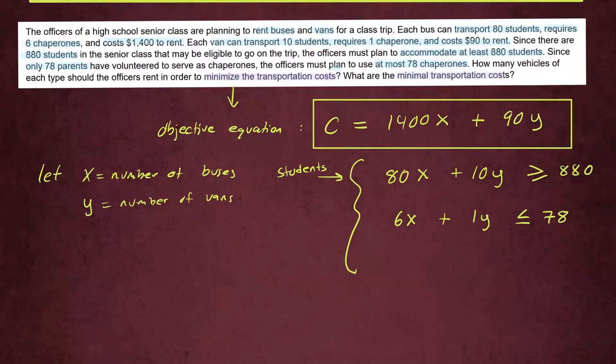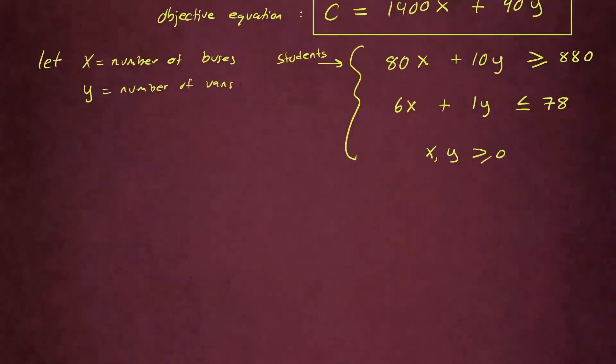We want to use this information to minimize our objective function. We also have to make sure that X and Y are positive numbers, so greater than or equal to 0. So this is what we call the constraint equations or the restrictions. And now we can graph them, find the feasible region, which we also call the solution region, figure out the corner points, and then we will see where we'll have the minimum cost. Let's go ahead and plot them.